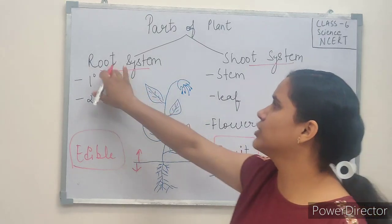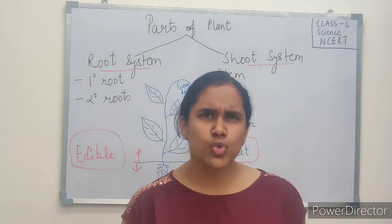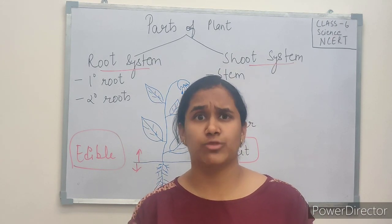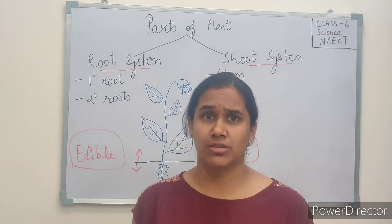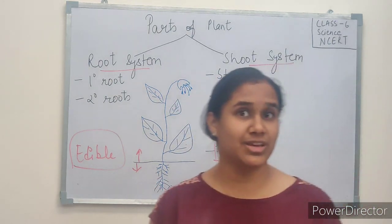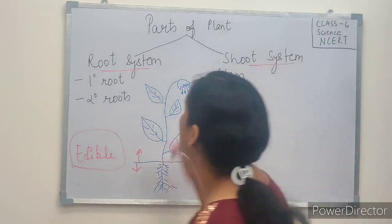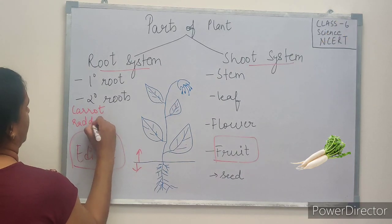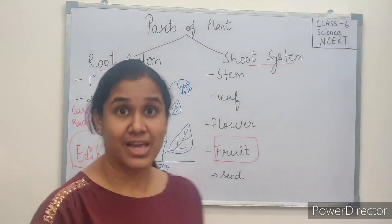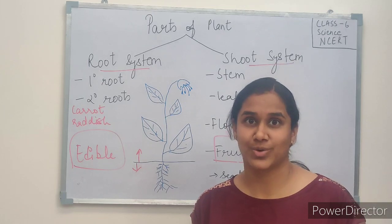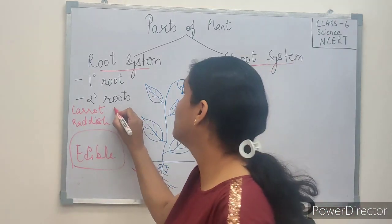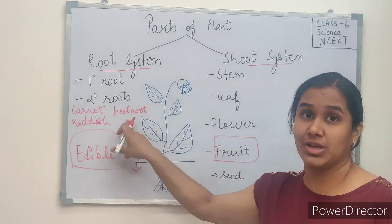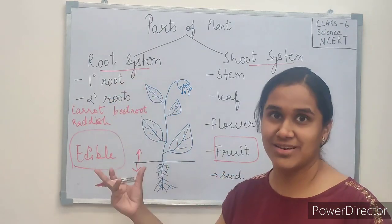Now let's look at the other parts of the plant — are they edible? Let's start with the root system. Can you think of any roots which are edible? Examples include carrot, radish, and beetroot. Think about which root is also edible and leave your answer in the comments section.